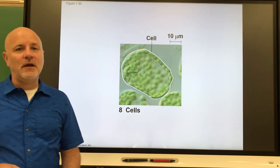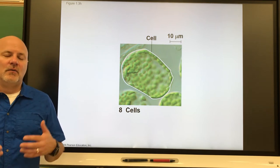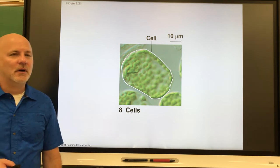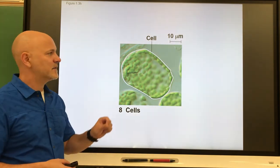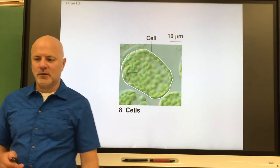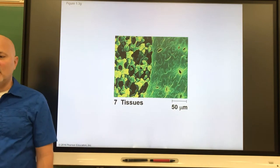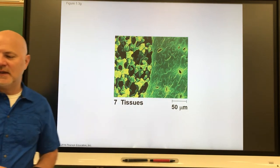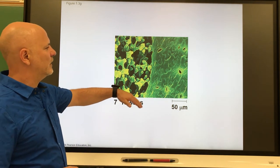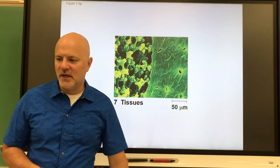Above that is the cellular level. The cell is the structural and fundamental unit of life — we are made of trillions of cells. Shown here is a plant cell with many chloroplasts, which make plants appear green and where photosynthesis occurs. A group of similar cells that have a common function forms a tissue. Shown here is a cross section through a leaf with an epidermis, a covering, and mesophyll where photosynthesis takes place.